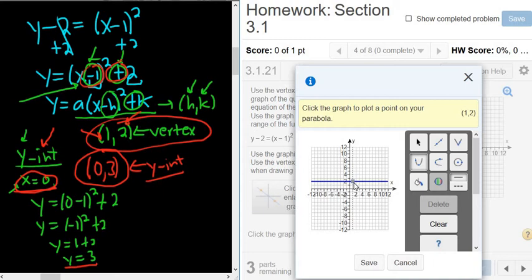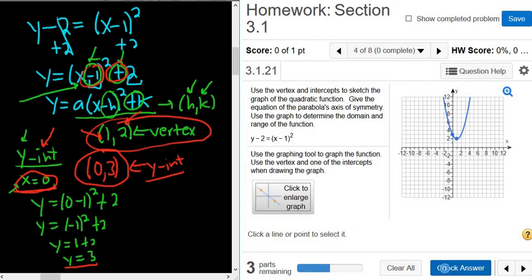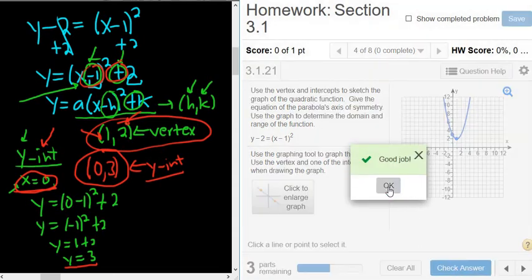Then y-intercept 0, 3. So I'm going to come over here. We're at 0, 3. I'm going to left click. There it is. That looks okay. Let's click save. And then the moment of truth, check answer. All right, we got it right. Good job.